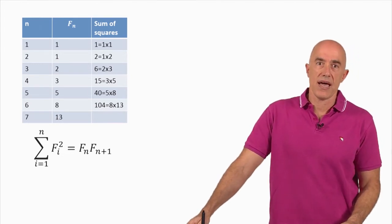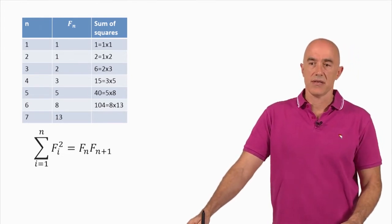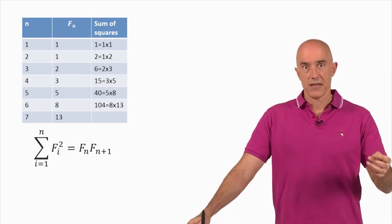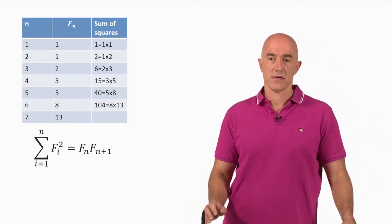The sum from i equals 1 to n F sub i squared is equal to F sub n times F sub n plus 1.